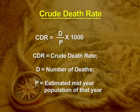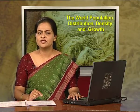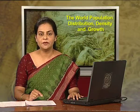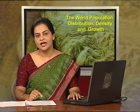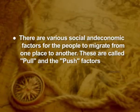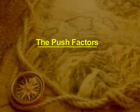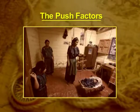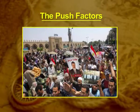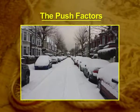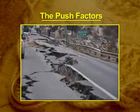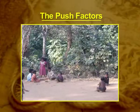The population changes with the change in the death rate, birth rate, and migration. There are various social and economic factors for people to migrate from one place to another. These are called pull and push factors. The push factors include poor living conditions, political turmoil, unpleasant climate, natural disasters, epidemic, and socio-economic backwardness, which may cause out-migration.